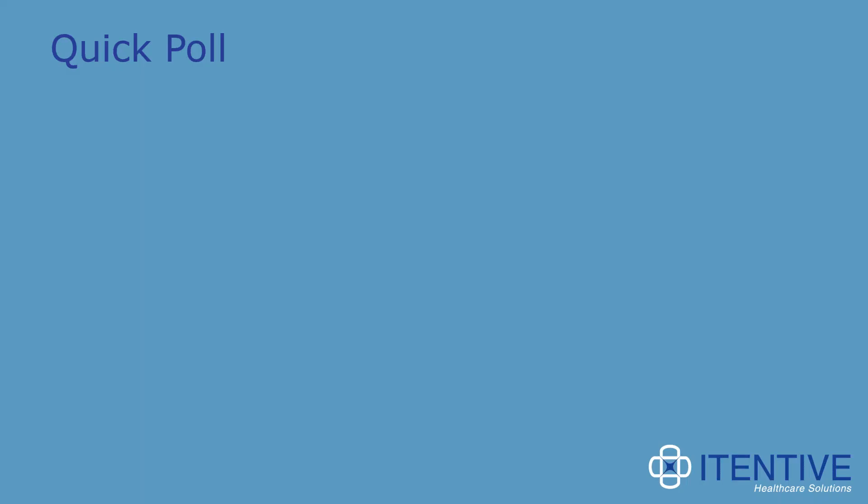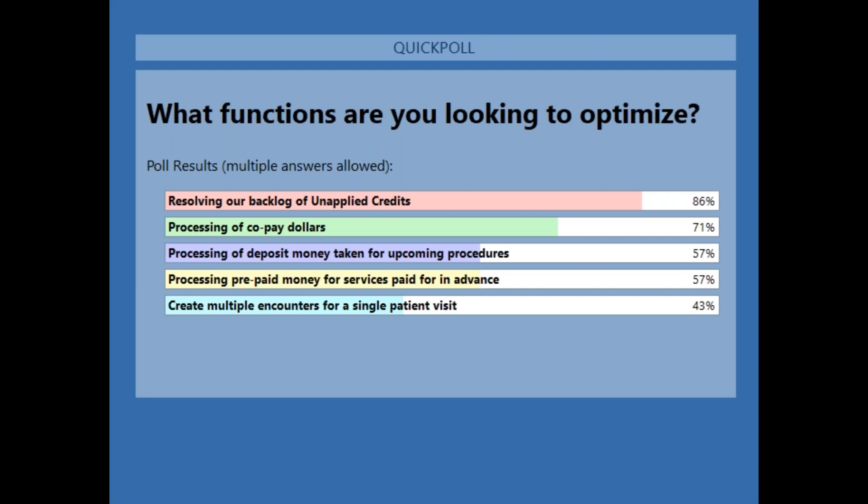So let's see what those results look like. It looks like most of you are having trouble resolving your backlog of unapplied credits and processing of copaid dollars. And then a good amount of you are having issues with pretty much everything else. I think that's a great point to help us guide what we want to focus on today.